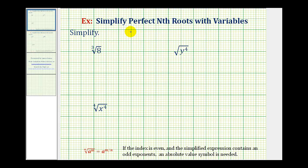Welcome to several examples of simplifying perfect nth roots, most of which contain variables. When simplifying radicals, it's extremely important that we're aware of the index of each radical.